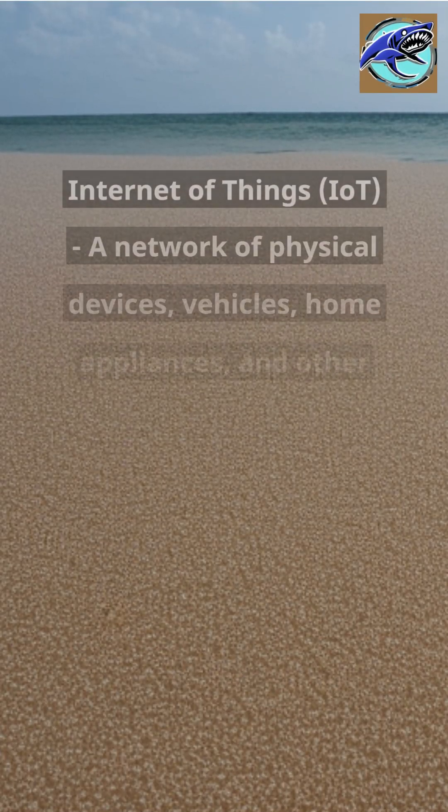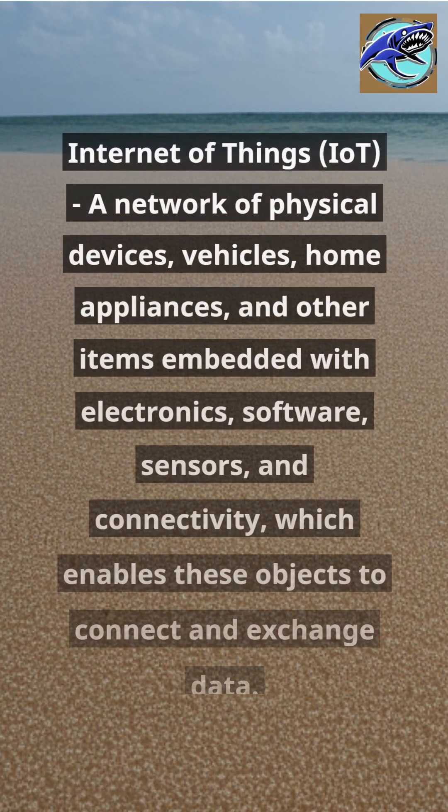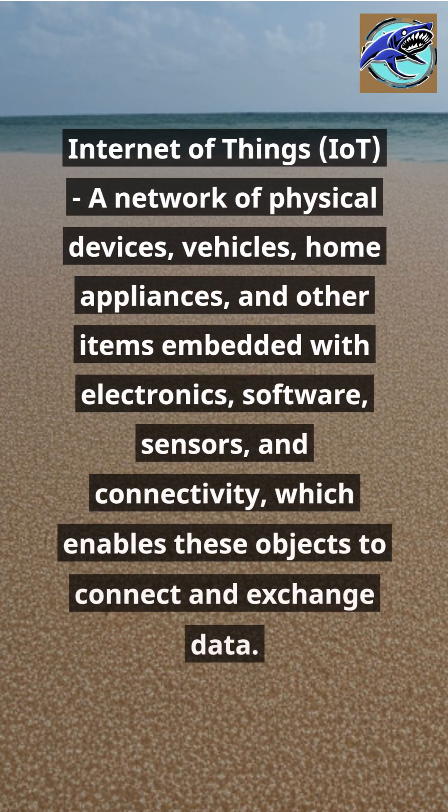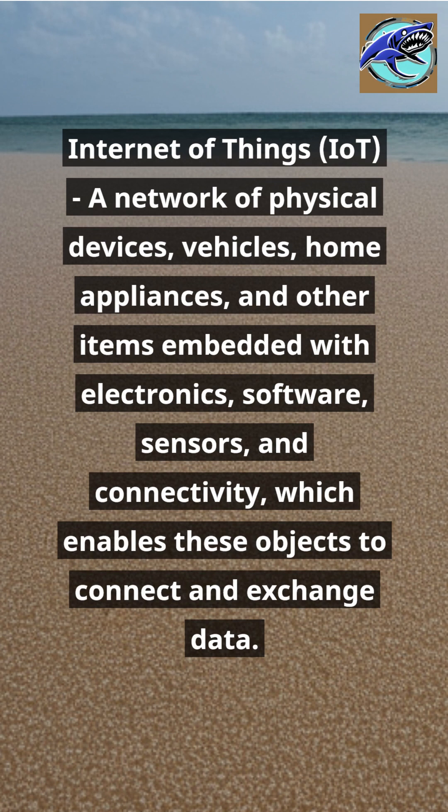Internet of Things, IoT: a network of physical devices, vehicles, home appliances, and other items embedded with electronics, software, sensors, and connectivity, which enables these objects to connect and exchange data.